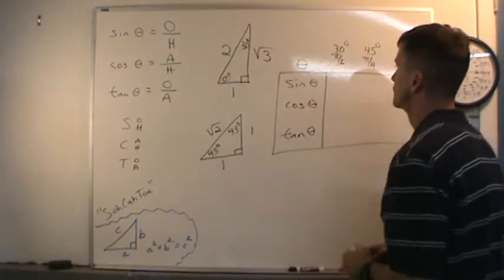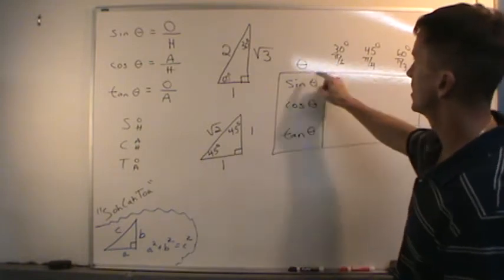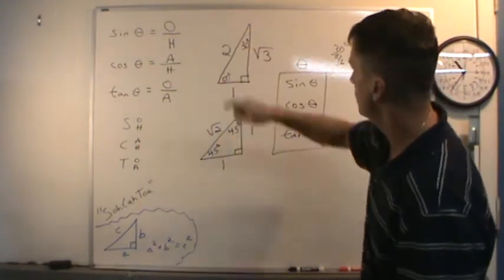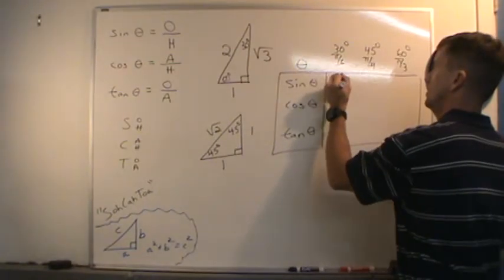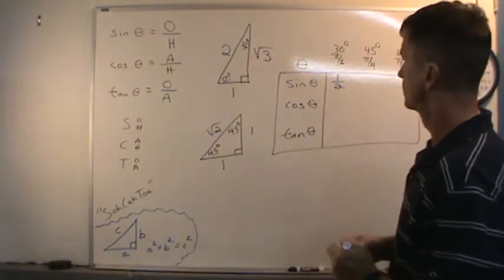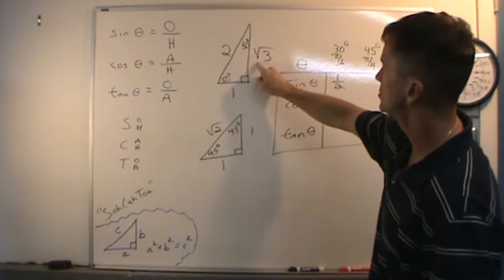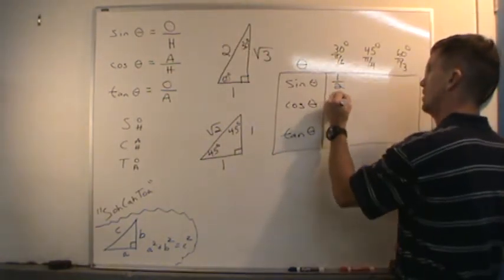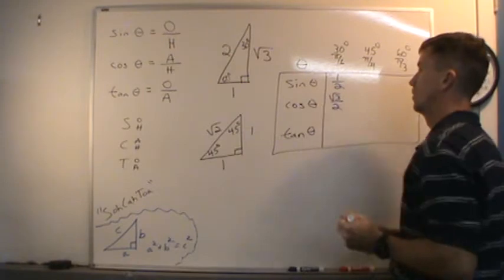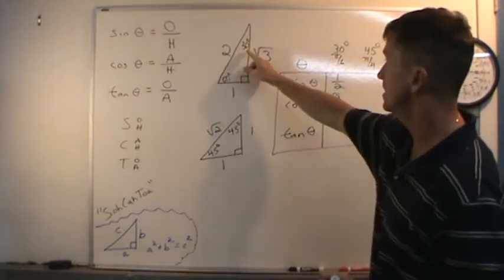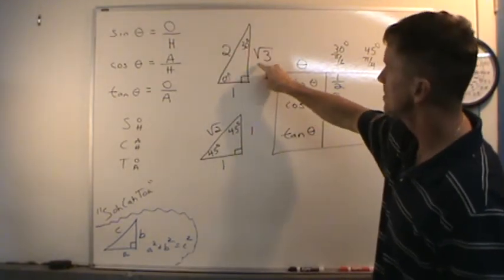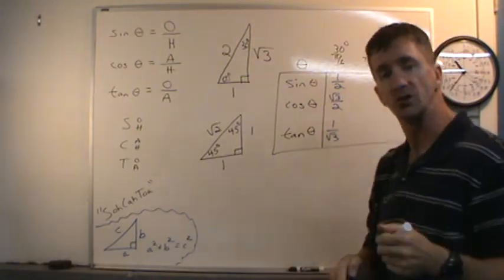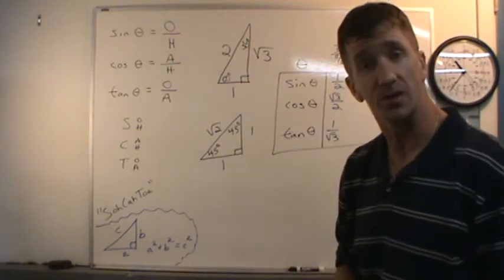Starting with 30 degrees: sine of 30 degrees is opposite over hypotenuse — 1 over 2. Cosine of 30 degrees is adjacent over hypotenuse — square root of 3 over 2. Tangent of 30 degrees is opposite over adjacent — 1 over the square root of 3. You can rationalize the denominator to get square root of 3 over 3.